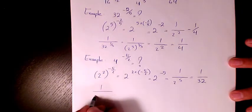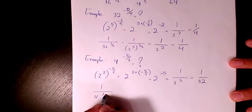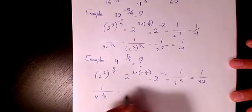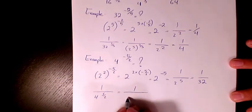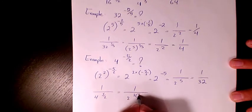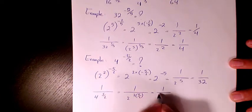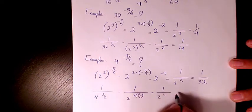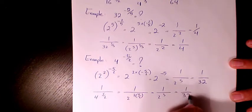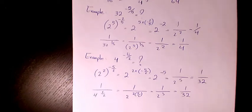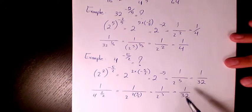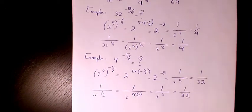Using the alternative method: 1 over 2 to the power of 5 times 2 over 5 — wait, it's 1 over 4 to the power of 5 over 2, which gives 1 over 2 to the power of 5, or 1 over 32. You get the same answer. I hope you enjoyed this video — please leave a comment if you have any questions.